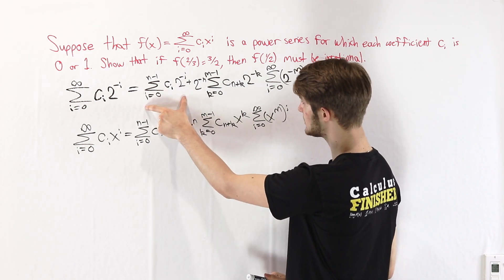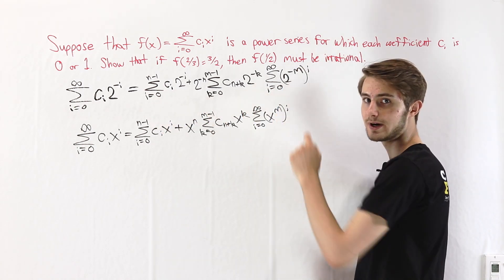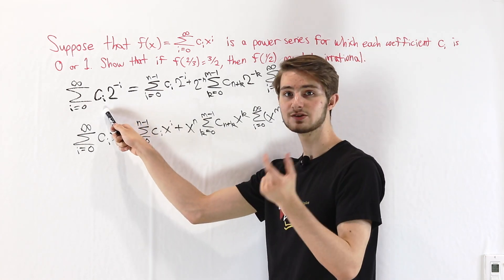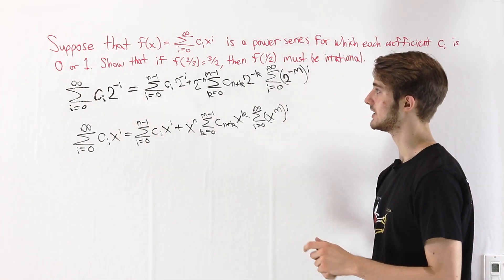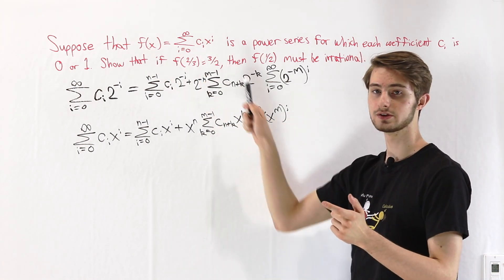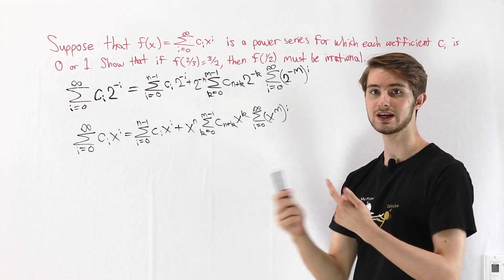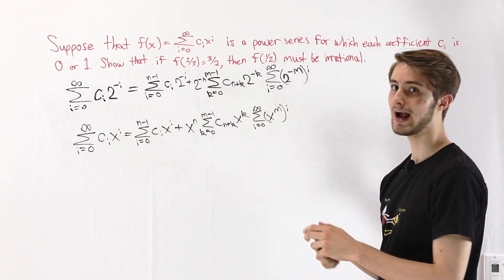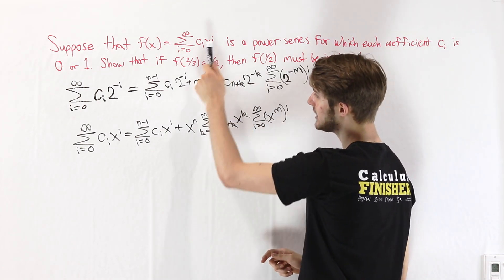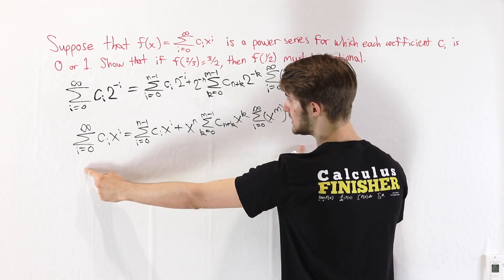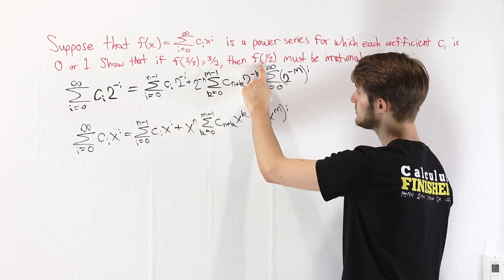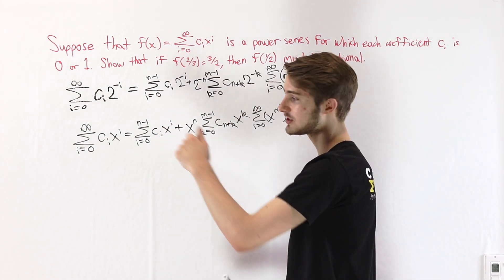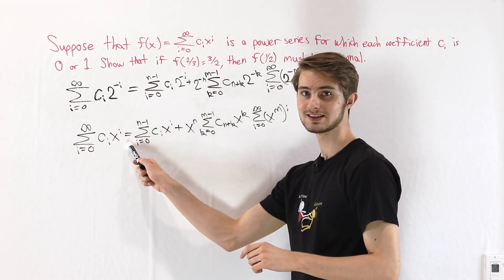This expansion tells us how the coefficients of the power series must behave for f(1/2). But this function has fixed coefficients — those c sub i are not going to change if we plug in a different input value. That means this representation, when we're looking at f(1/2) for the binary expansion, must be true for any value we plug in for x. So anywhere we had 2 to the negative something, we replace it with x to the power of that same thing.